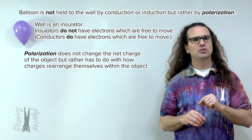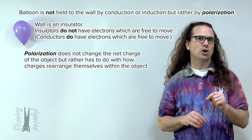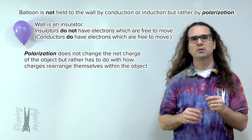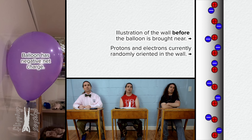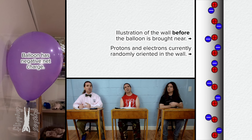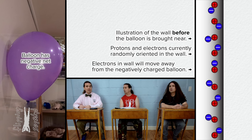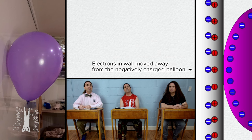How do you think the charges are going to rearrange themselves? And how do you think charges in the wall rearranging themselves will make it so the balloon is attracted to the wall? We know the balloon has an excess of electrons, so a net negative charge. The protons in the wall are not going to move. However, the electrons can move in their orbits around the nucleus. So the electrons in the wall are going to move away from the electrons in the balloon because, according to the law of charges, the electrons in the wall will be repelled from electrons in the balloon because they both have negative charges. So that means the protons in the wall will be closer to the electrons in the balloon, and the electrons in the wall will be farther from the electrons in the balloon.